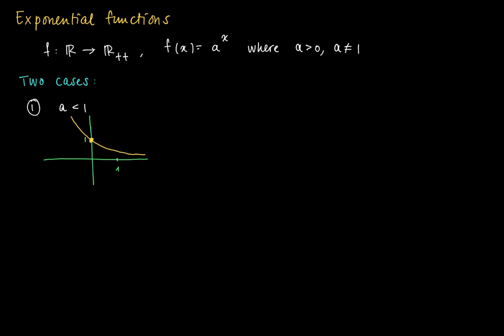A to the power 0 equals 1. And if I plug in 1, a to the power 1 is, of course, equal to a. So a characteristic of this function is that when x becomes arbitrarily large, when x goes to infinity, then f(x) goes to 0. For instance, if I take a equals 1 half, 1 half to the power 100 is almost 0. And 1 half to the power minus 100 is 2 to the power 100, almost infinity, tends to infinity.